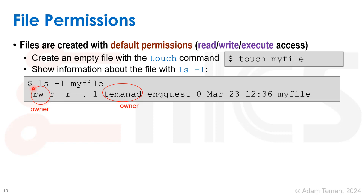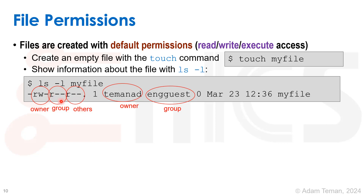If I want it to be a program, I have to change the permissions to make it executable. Beyond those first three characters, there are other trios showing permissions for the group. Each user belongs to several groups in Linux, and I can set permissions to files and directories according to whole groups. The group here has read permissions only — the group can't write to it, only the owner can. The file belongs to a group called 'nguest', which was the default group we assigned. And the third trio is for everybody else.